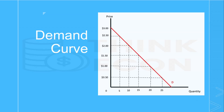If you have any knowledge of basic economics, then you're familiar with the concept of supply and demand. The supply and demand curves are plotted on a graph with price on the vertical axis and quantity on the horizontal axis. The law of demand states that as prices increase, quantity demanded decreases, hence why the demand curve is negatively sloped.